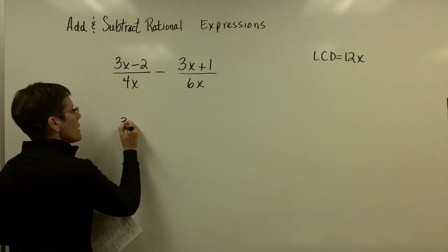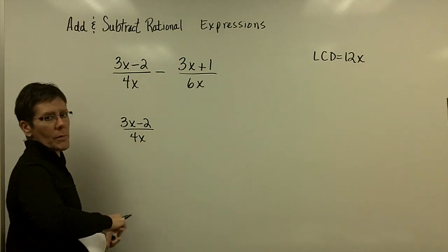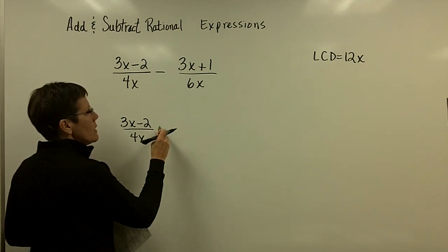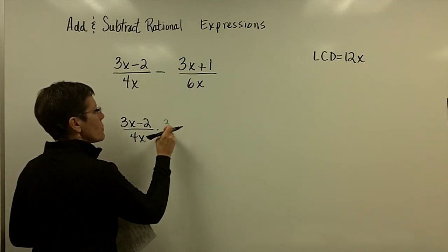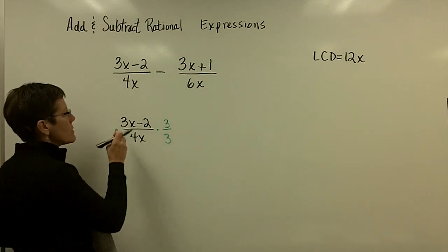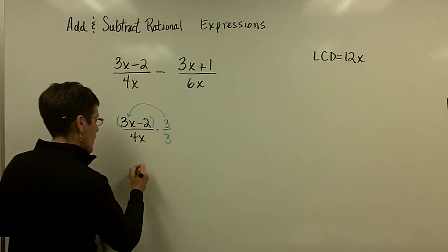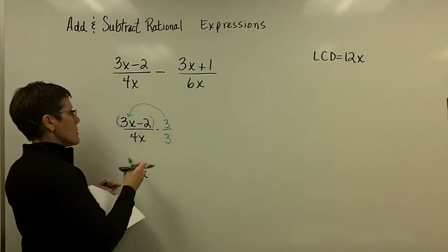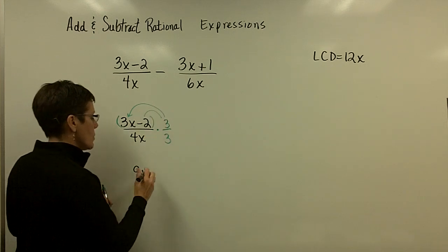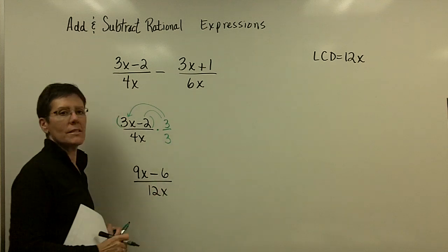So, this (3x-2)/(4x), I'm going to do this officially, needs to be multiplied by 3/3 for that denominator to become the 12x. So, please remember, you've got to take this 3 times 3x and get 9x, and this 3 times a minus 2 and get a minus 6. And then you have that common denominator.